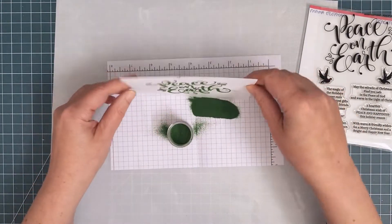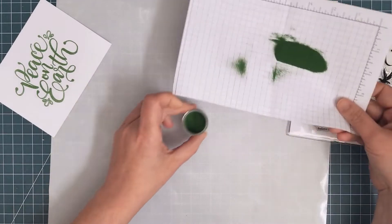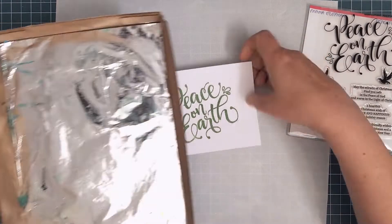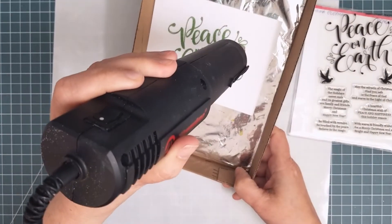Using a folded piece of scrap paper makes it easy to tip the extra powder back into the jar. I preheated my heat gun then brought it to my panel and heated it until it was all melted and smooth.